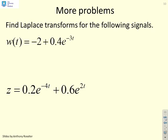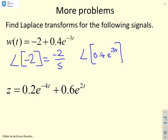So here's a couple of examples for you to try. Find the Laplace transforms for the following signals. And what you need to do is just write Laplace of minus 2, that's a constant, is going to be minus 2 over s, and Laplace of 0.4e to the minus 3t is going to be 0.4 over s plus 3, and therefore the result, I'll just squeeze it in here, is going to be minus 2 over s plus 0.4 over s plus 3. Now clearly, you could give those two terms a common denominator by multiplying up, but I'm not going to bother with that at this point here.